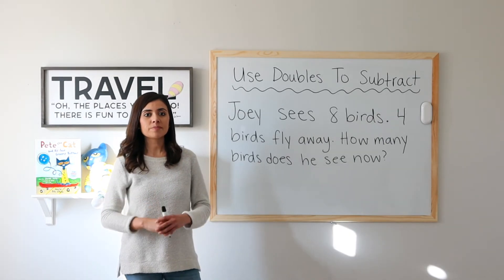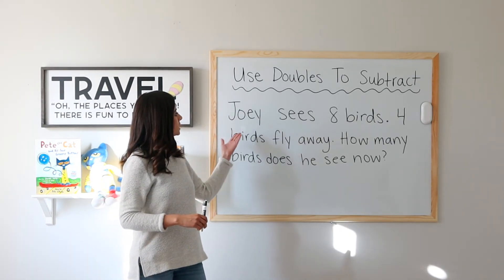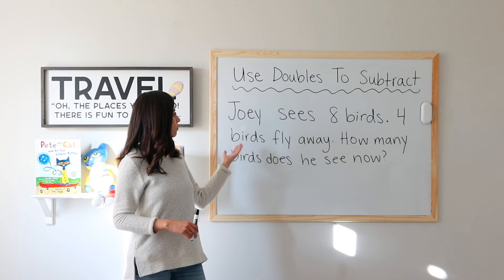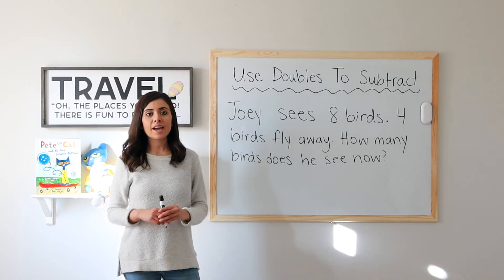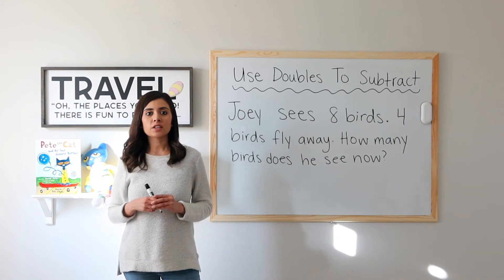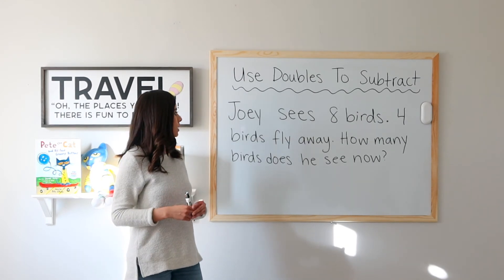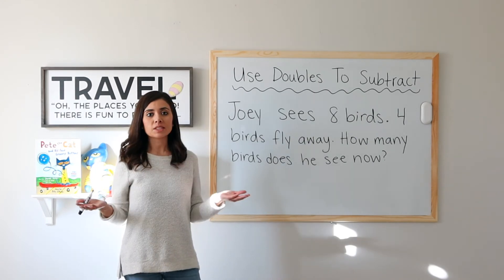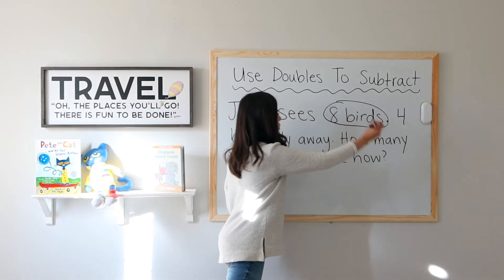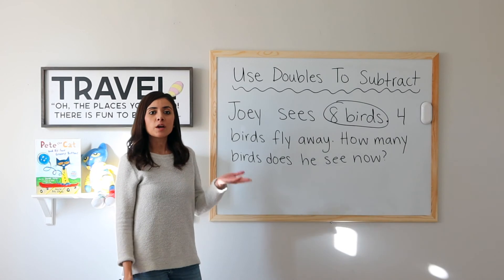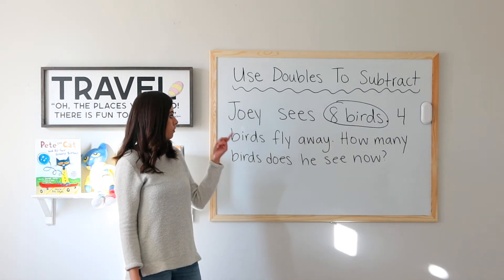Okay, ready for the word problem? It says Joey sees eight birds. Four birds fly away. How many birds does he see now? Let's start by circling what we already know. We know that Joey sees eight birds in the beginning. Circle eight birds. How many flew away? Four.